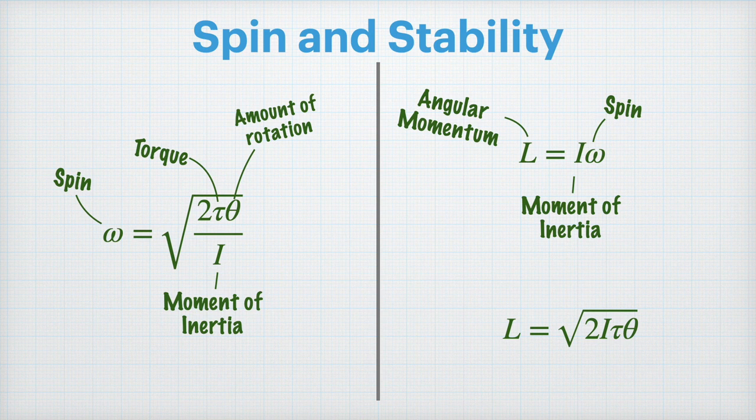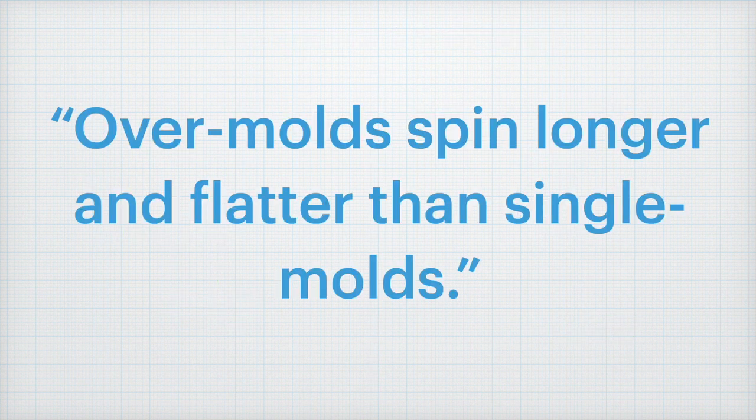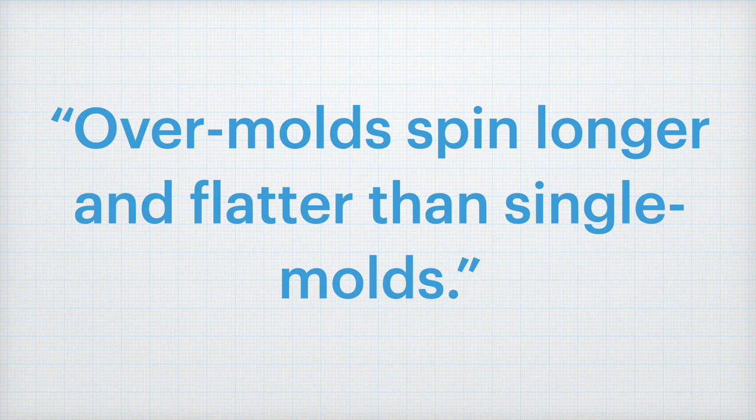Now having more angular momentum leads to two things. It leads to overmolds spinning longer and flatter than single molds.